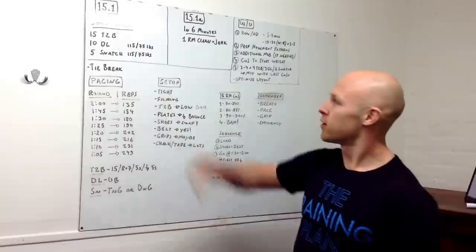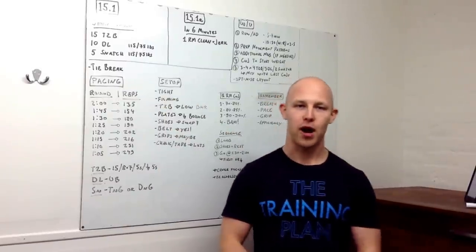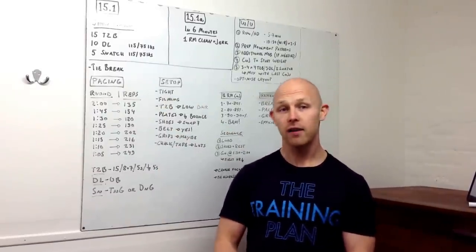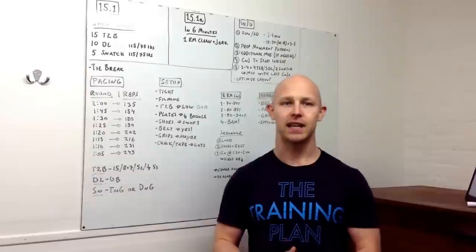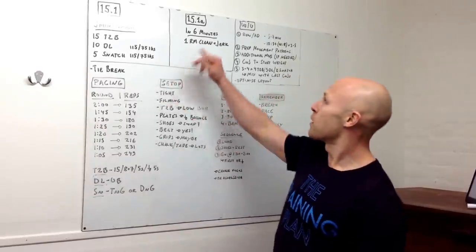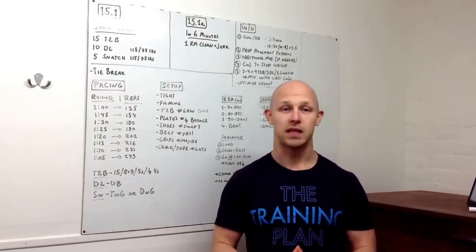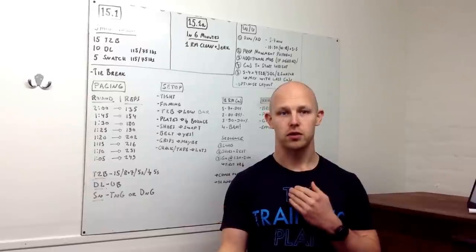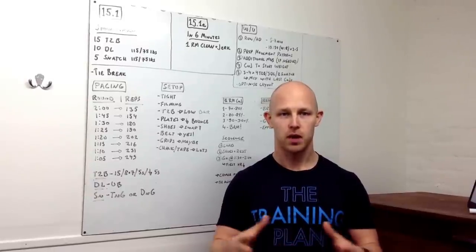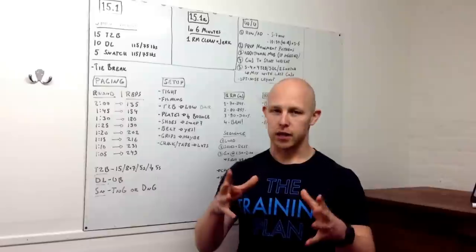Now, if you've done that, first piece - you already know this: 9-minute AMRAP of 15, 10, and 5 with toes-to-bar, then light deadlift and snatch. Then we have 15.1A, which is going to be in 6 minutes, establish a 1 rep max straight after. No pause in between, we're going to go straight into it. There's a lot to consider here.